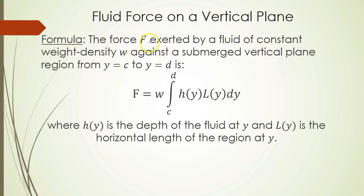The force F exerted by a fluid of constant weight density W against a submerged vertical plane region from y-coordinate C to y-coordinate D is given by the integral: F equals W times the integral from C to D of H(y) times L(y) dy. Here H(y) is the depth of the fluid at y, and L(y) is the horizontal length of the region at y. The best way to understand this is to look at an example.